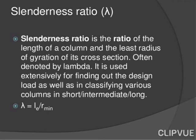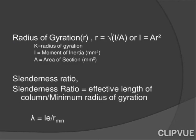Slenderness ratio is the ratio of the length of the column to the least radius of gyration of its cross section, often denoted by lambda. It is used extensively for finding the design load and for classifying columns as short, intermediate, or long. Lambda = effective length / radius of gyration. The radius of gyration r = √(I/A), or equivalently I = A·r².